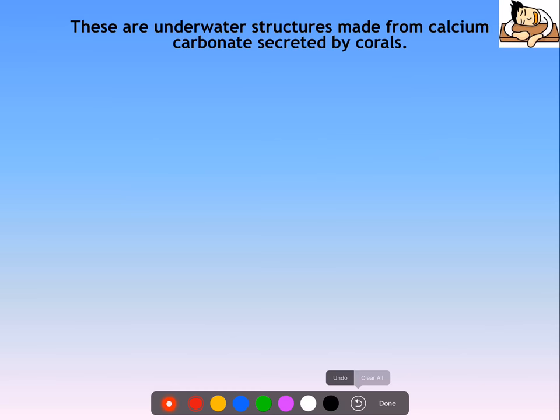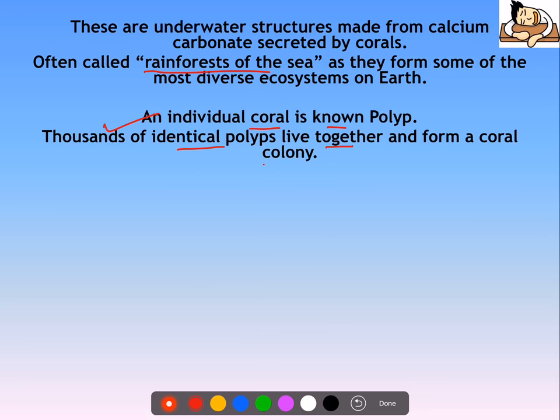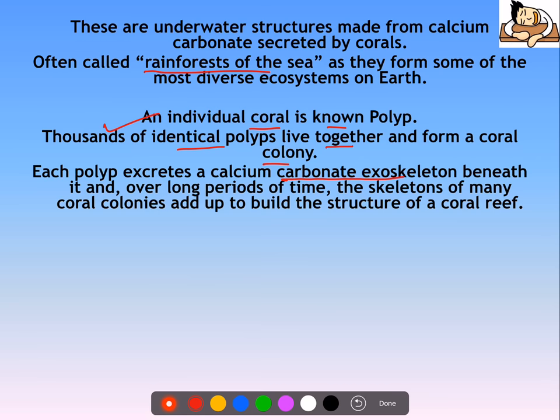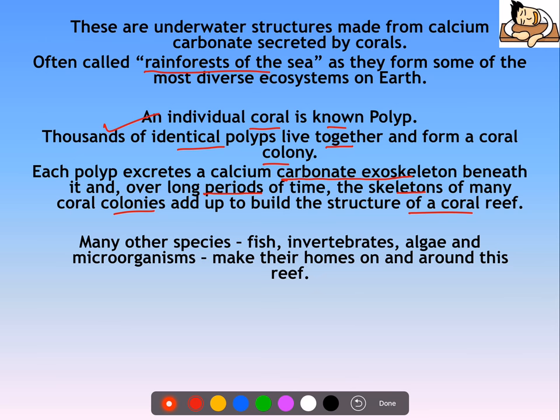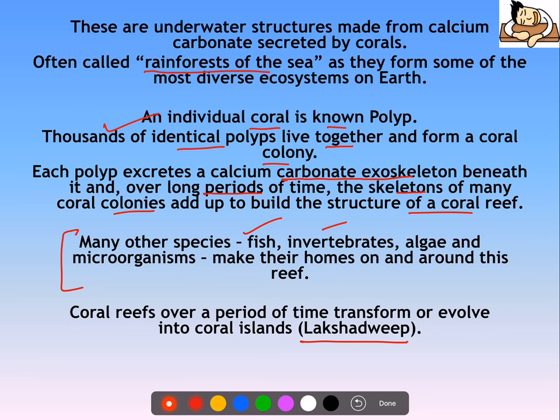Coral reefs ko rain forest of the sea bhi kaha jata hai, kyunki bahut saray organisms in and around these coral reefs rehtay hain — huge biodiversity is hosted by these organisms. An individual coral is called a polyp. Thousands of identical polyps live together and form a coral colony. Each polyp excretes a calcium carbonate exoskeleton, and over periods of time, the skeletons of many coral colonies end up becoming a coral reef. Yeh coral reef bhi coral island mein convert ho sakta hai over a long period of time, like Lakshadweep Islands in India. Bahut saari species — fish, invertebrates, algae, microbes — they make these corals their home.